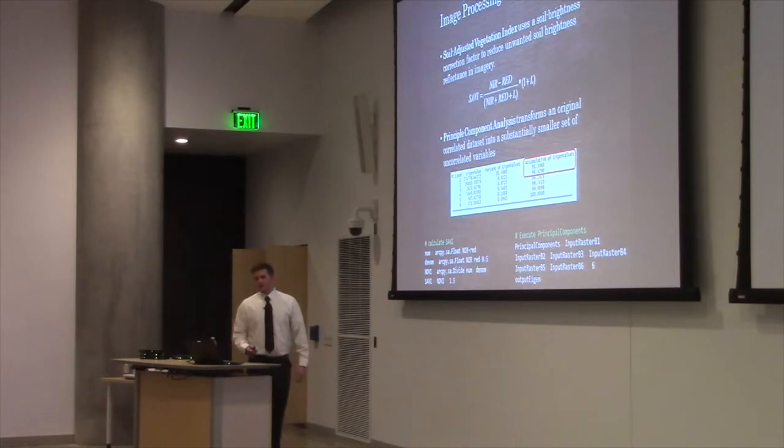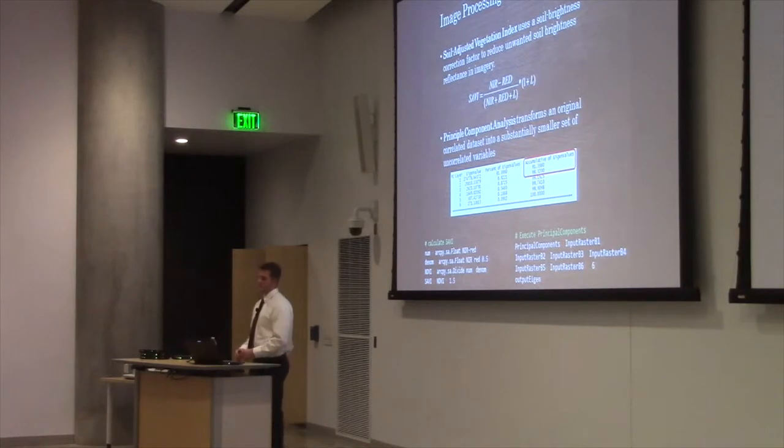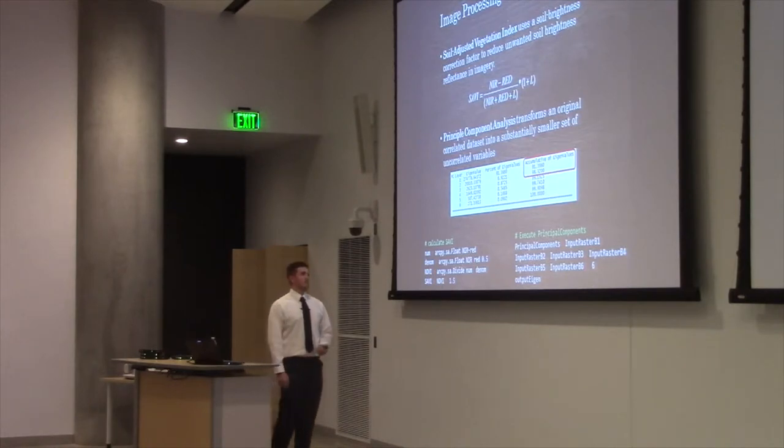We use principal components analysis. This looks to transform an original dataset into a substantially smaller, uncorrelated dataset. This is big. When you're working with raster imagery, it's usually large data files. Being able to reduce the size of those files will significantly cut down on your processing time. Principal component analysis looks to capture the variance of your dataset. The more variance that's captured, the more information content. Information content is measured as eigenvalues. We can see that the accumulation of eigenvalues in the first two principal components is 98%. Generally, you want to get at least 95% information content from your imagery. Then you can discard the rest of the principal components.